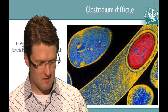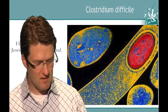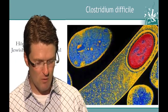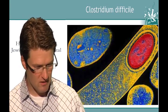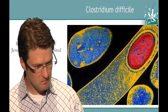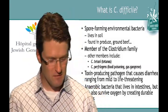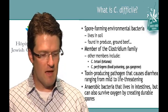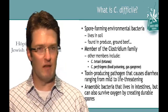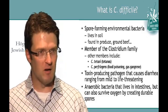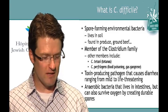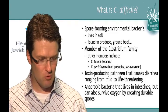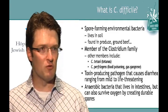Moving on to C. difficile — this is an electron micrograph picture of C. diff, and that big red thing you see is a spore that I'll speak more about. So what is C. difficile? It's a spore-forming environmental bacteria. If you go out right now with a shovel and dig a shovelful of dirt, I guarantee you'll find C. diff somewhere in it.